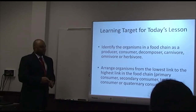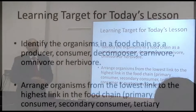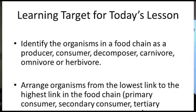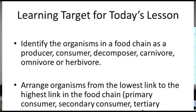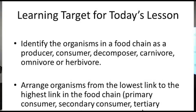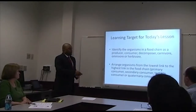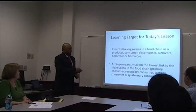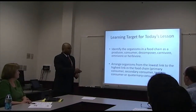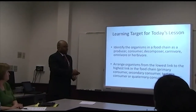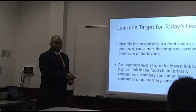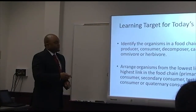Today we'll become familiar with all of this terminology and be able to identify the components of a food chain using these terms. Dr. Lee, would you read the second learning target? Arrange organisms from the lowest link to the highest link in the food chain: primary consumer, secondary consumer, tertiary consumer, or quaternary consumer. In addition to identifying food chain components, we will also identify primary, secondary, tertiary, and quaternary consumers in each food chain.